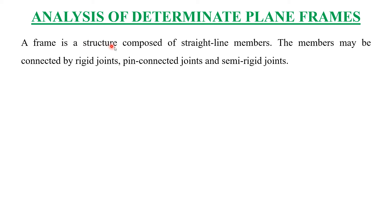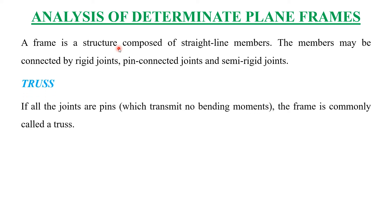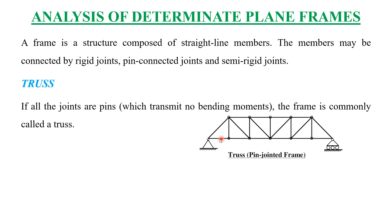There are further divisions in frame structures. The first type is a truss. A truss is a structure or type of frame in which all joints are pin connected. There will be pins between each two members, and there will be no transfer of bending moment. Only two equations of equilibrium apply: summation of forces along the x-axis and summation of forces along the y-axis equal to zero.